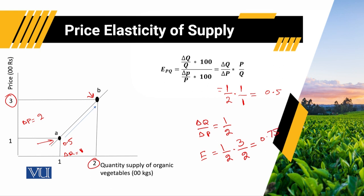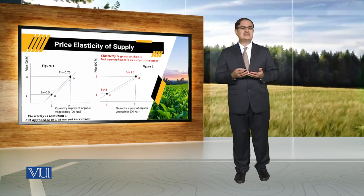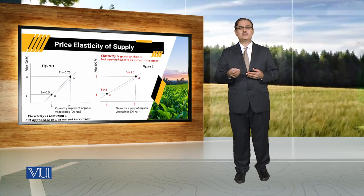Price elasticity of supply at point B is equal to 0.75. By looking at the computed values of elasticity against point A and against point B, we can observe that the slope of the supply curve is the same. But with the change in price and quantity against which we are computing the elasticities, there is a change in the computed value of price elasticity of supply. Computed values of elasticity are different against different points of the supply curve.